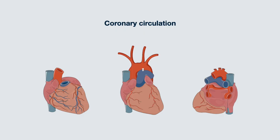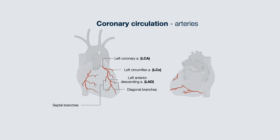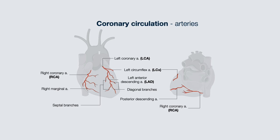We will now provide a simplified overview of the coronary circulation. Note that the left and right coronary arteries come from the base of the aorta. Here is the left coronary artery, which runs along the coronary sulcus. The branches of the left coronary artery include the left circumflex artery, which supplies the lateral wall of the heart, and the left anterior descending artery, which supplies the anteroseptal wall of the heart, with septal and diagonal branches. The left circumflex extends posteriorly and supplies the posterolateral aspect of the heart. The right coronary artery supplies the inferior wall and also forms the right marginal artery. The right coronary artery can also extend posteriorly to form the posterior descending artery, which supplies the posterior wall.